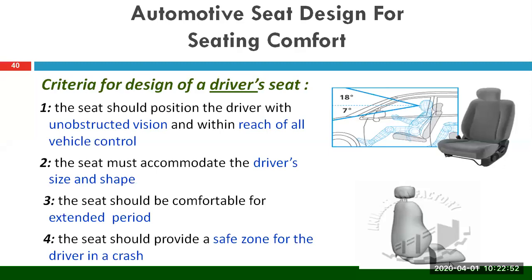Something that also needs to be remembered is that whenever the vehicle is going to go into a crash, the driver or co-driver needs to make sure that he or she is wearing a seat belt. Unless you have a seat belt being used by the occupants, you cannot guarantee that they are going to be protected in case of a crash. It is going to primarily reduce the inertia forces generated because of a sudden halt, and to reduce the impact you need to minimize the acceleration force acting on the occupants.